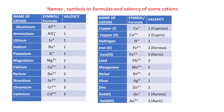In the next video, we will discuss how to write the formula of a compound. For that purpose, you have to memorize the names, symbols, formulas, and valency of cations and anions. Aluminium: Al3+, valency is 3. Ammonium: NH4+, valency is 1. Lithium: Li+, valency is 1. Sodium: Na+, valency is 1. Potassium: K+, valency is 1.